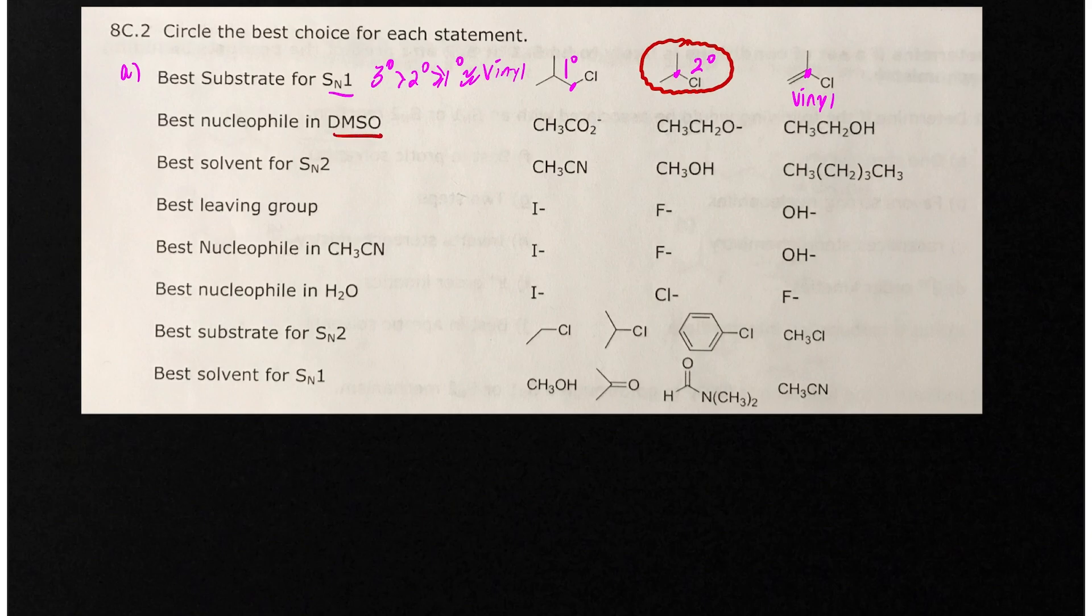Best nucleophile in DMSO - for polar aprotic solvents is going to be the more basic nucleophile. We have acetate, we have ethoxide, and then this neutral thing. So, this right here is the most basic. You might have to refer to a pKa table, but I won't go over that a lot.